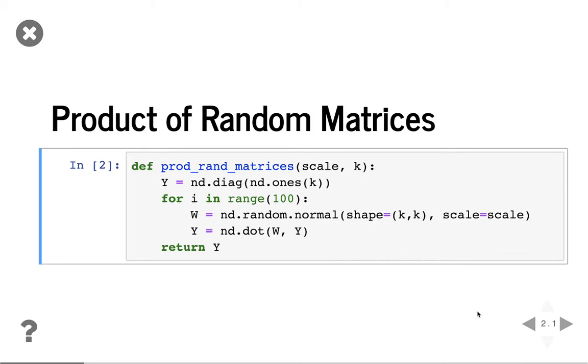So here we define a function called prod_random_matrices with two arguments. The first one is called scale, which controls the variance of the random matrices. And then k is the shape. So now we first generate y, which is the input, is a diagonal as identity matrix, and then we do 100 multiplications. Every time we generate a random matrix using a normal distribution, and the shape is k by k, and the variance is by scale. And we do multiplication between W and Y and save the result to Y. We return Y, then this is 100 random matrix multiplication.